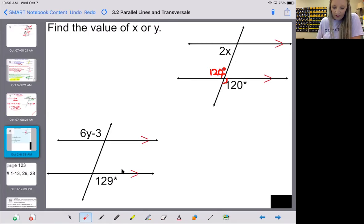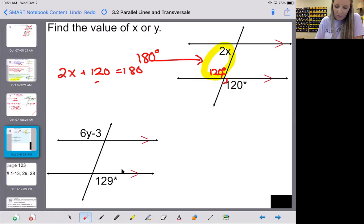And then I noticed that I have right here a pair of consecutive interior. So those equal 180. And so I'm going to set up 2X plus 120 equals 180. If I subtract 120 to the other side, I get 60. And if I divide by 2, I get X equals 30.